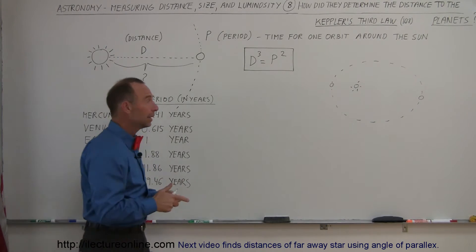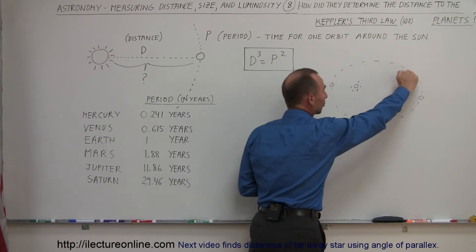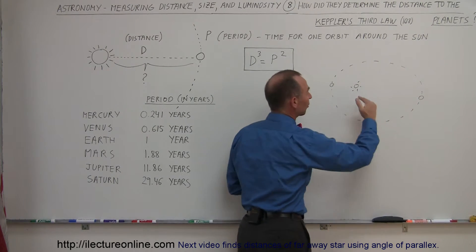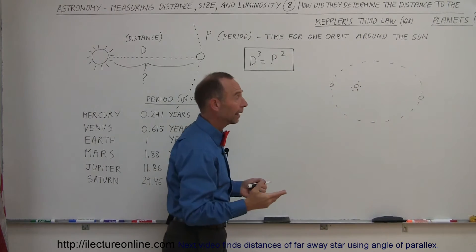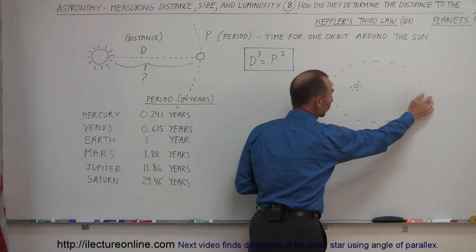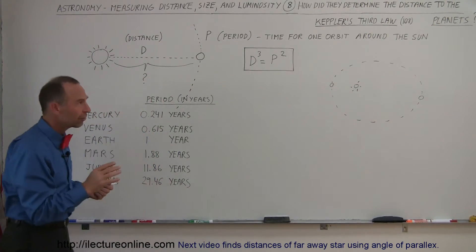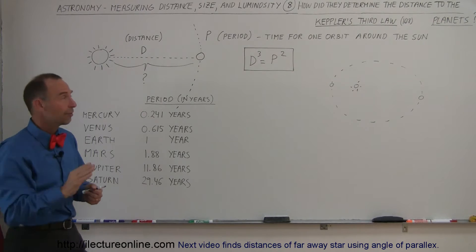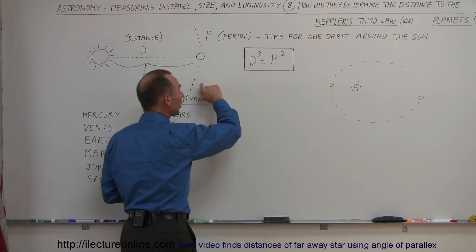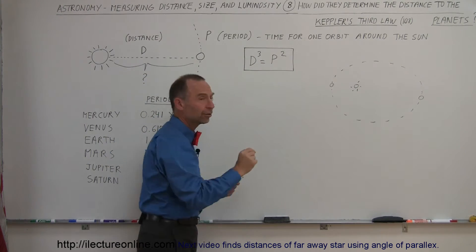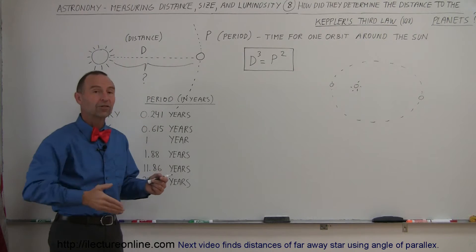The second law, he realized that when the planets were closer to the sun they moved faster, and when the planets were far away from the sun they moved slower, in such a way that the area swept out per unit time was always equal. But the real key to understanding how far things were, especially the distance of the planets, was the third law of Kepler when he realized that the distance to each planet from the sun cubed equals the period of each planet squared, the period meaning the time it took to go around the sun once.